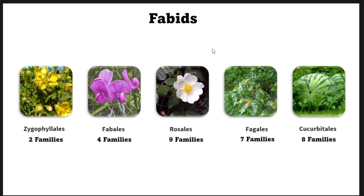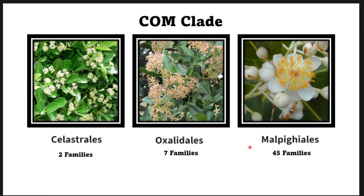Rosids are further classified into fabids and malvids. Within fabids there are five orders before the COM clade: Zygophyllales with two families, Fabales with four families, Rosales with nine families, Fagales with seven families, and Cucurbitales with eight families. The COM clade contains three orders: Celastrales with two families, Oxalidales with seven families, and Malpighiales with 45 families. The name COM refers to the first letters of these three order names.